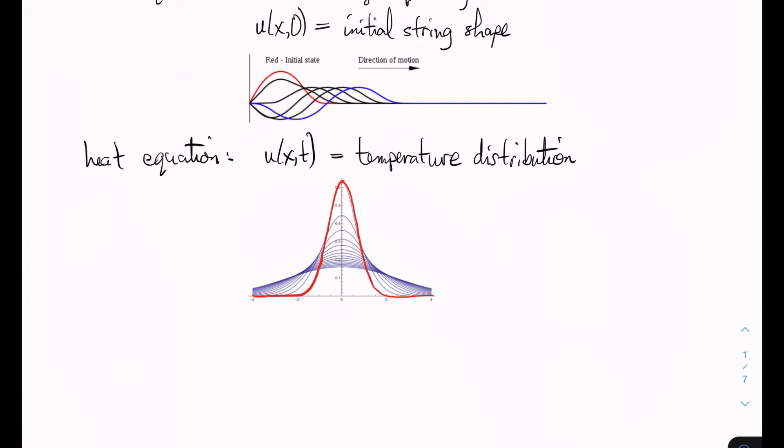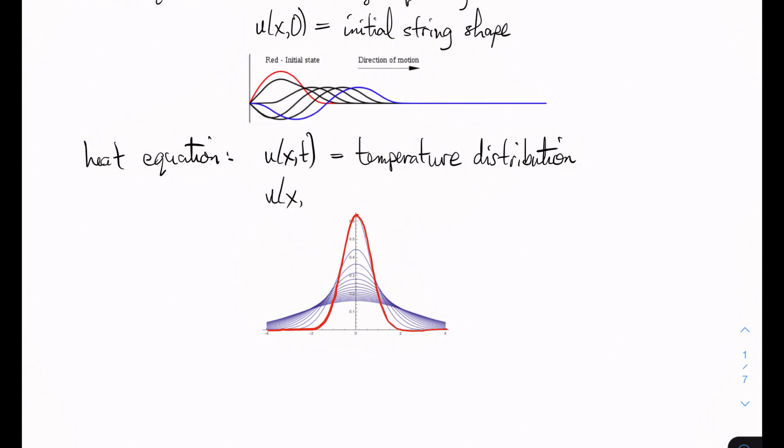So in this case, u of x times zero would be the initial heat profile in the object. Suppose it's like a rod or something like that, something relatively one dimensional.